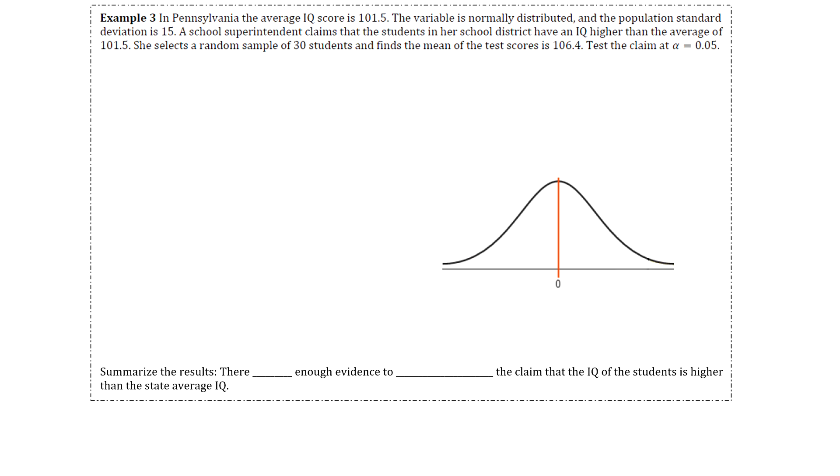Example three says in Pennsylvania, the average IQ score is 101.5. The variable is normally distributed and the population standard deviation is 15. A school superintendent claims that the students in her school district have an IQ higher than the average of 101.5. She selects a random sample of 30 students and finds that the mean of the test scores for those students is 106.4.